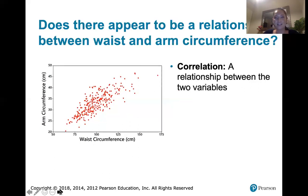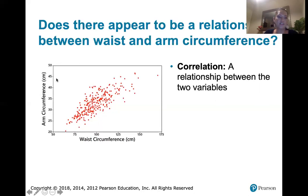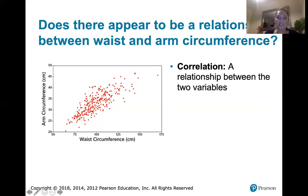Correlation is our technical term for a relationship between two variables. So when I asked you does there appear to be a relationship between waist and arm circumference, what I was asking in other words is: is there a correlation between waist circumference and arm circumference? Just glancing at this and using my intuition, it looks to me like as waist circumference goes up, arm circumference goes up. So there does appear to be a correlation between those variables based on this picture.